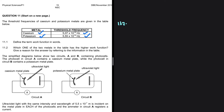The work function is equal to Planck's constant multiplied by the threshold frequency. It is easy to see that the work function is directly proportional to the threshold frequency, so the metal with a higher threshold frequency has a higher work function.